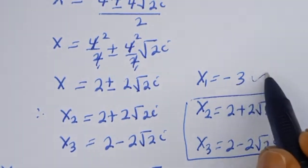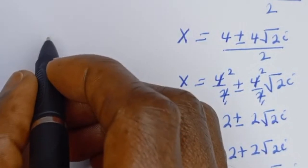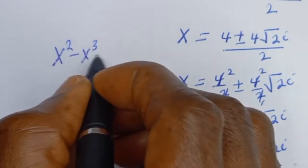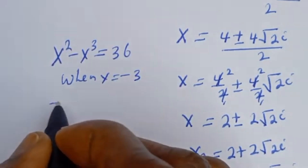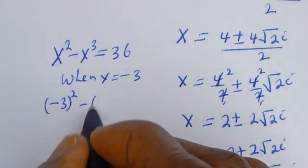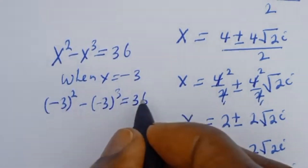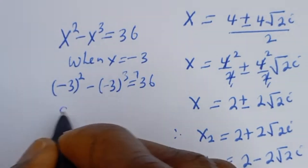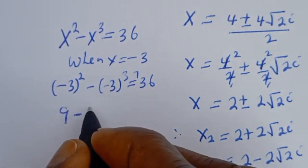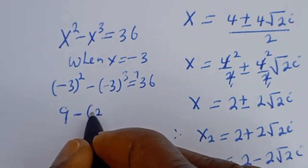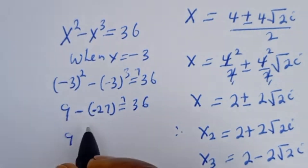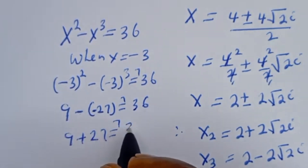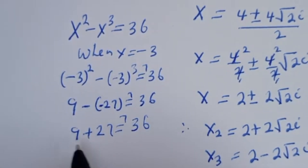We check using the only real solution. From the given equation S squared minus S to the power of 3 equals 36, when S equals minus 3: minus 3 squared minus minus 3 to the power of 3 must equal 36. Minus 3 squared is 9, minus minus 27 is plus 27, so 9 plus 27 equals 36, which is true.